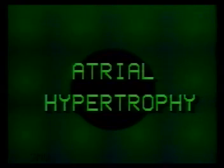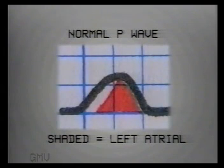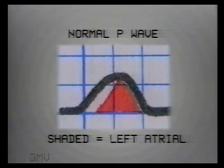Atrial hypertrophy can be diagnosed from the contour of the P waves, seen best in lead 2.